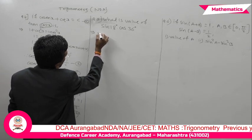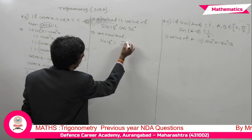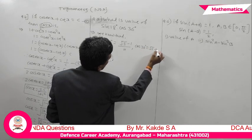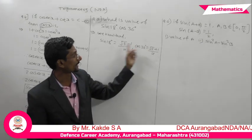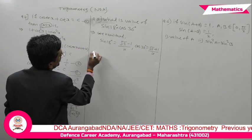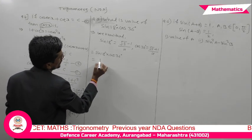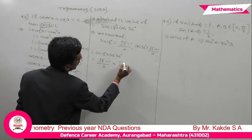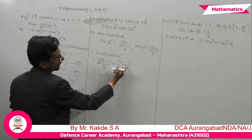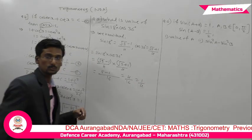Example five: find sin18° × cos36°. We know the standard values: sin18° = (√5 - 1)/4 and cos36° = (√5 + 1)/4. Multiplying: [(√5 - 1)/4] × [(√5 + 1)/4]. Using a² - b²: (√5)² - 1² = 5 - 1 = 4. So the product is 4/16 = 1/4. The solution of example five is 1/4.